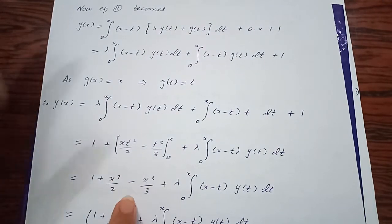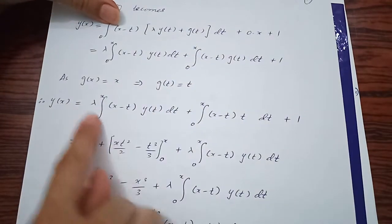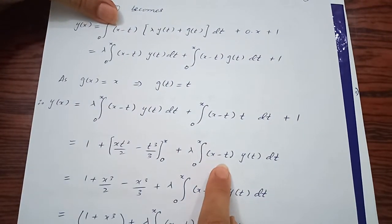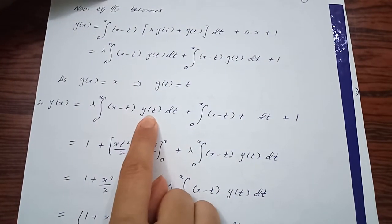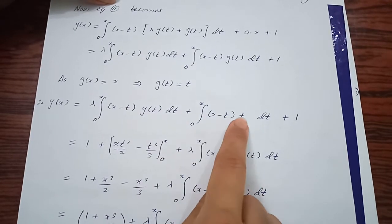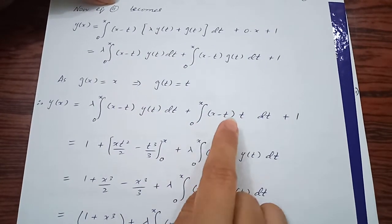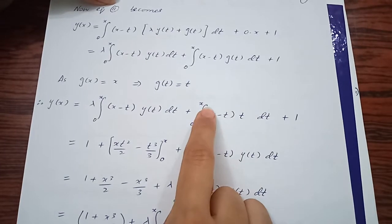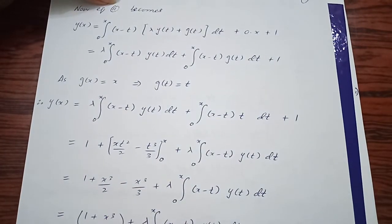When you integrate, this part you're not integrating directly because you don't know y(t). Integrate x·t and -t² with respect to t, apply the upper and lower limits, and simplify. You'll get y(x), and this is your integral equation.